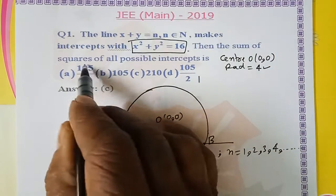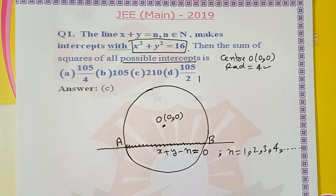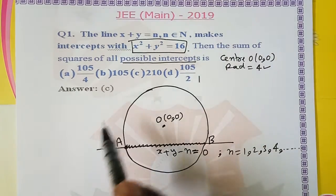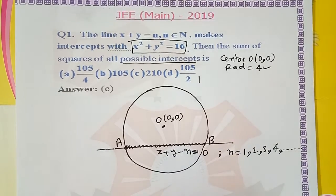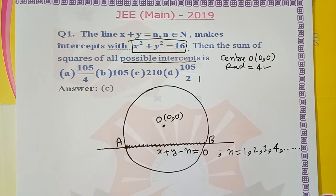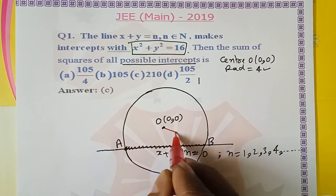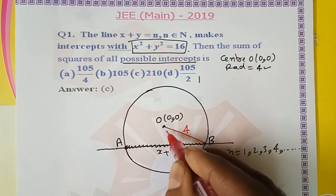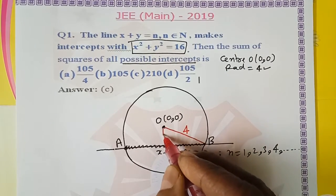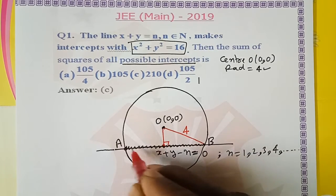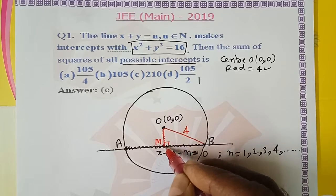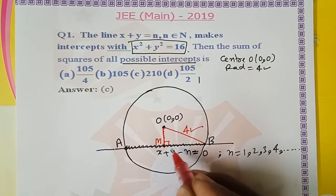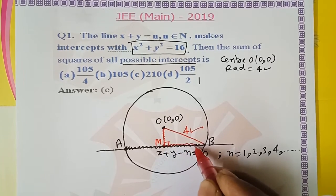We need to find the sum of squares of all such intercepts. For example, AB square and then sum of squares of all intercepts. Let's draw perpendicular from center O to the chord. The midpoint is M. This is a right triangle with hypotenuse, and MB is half the chord.